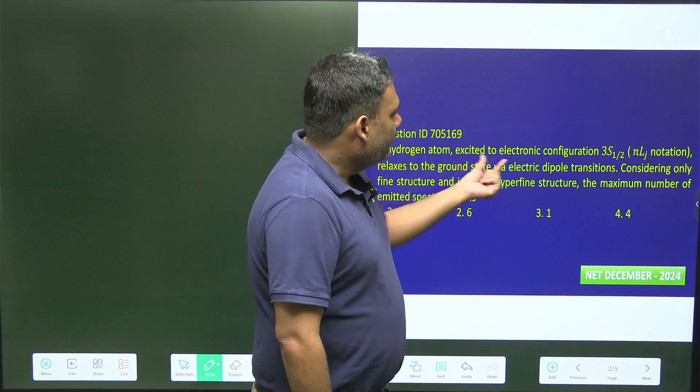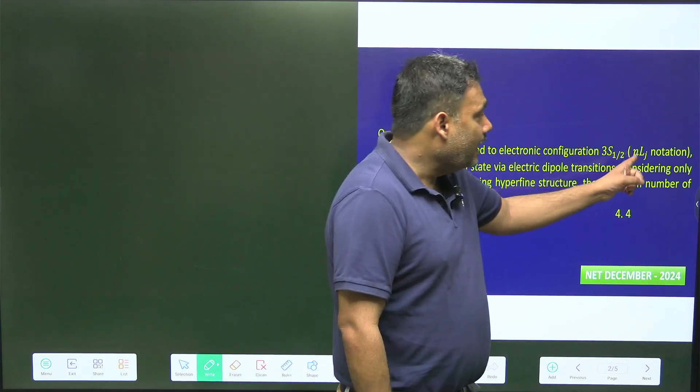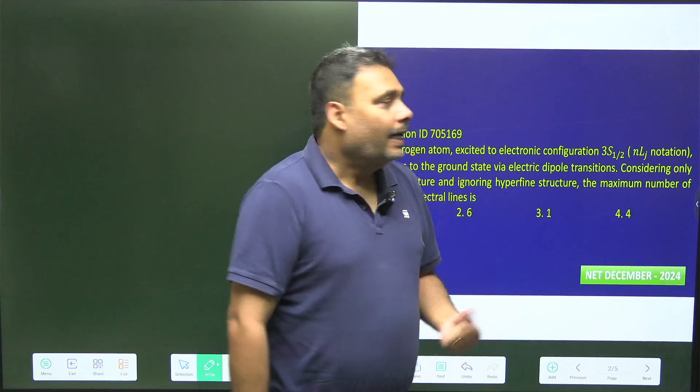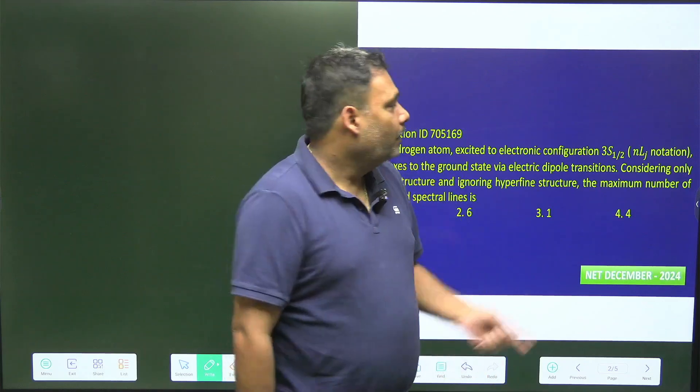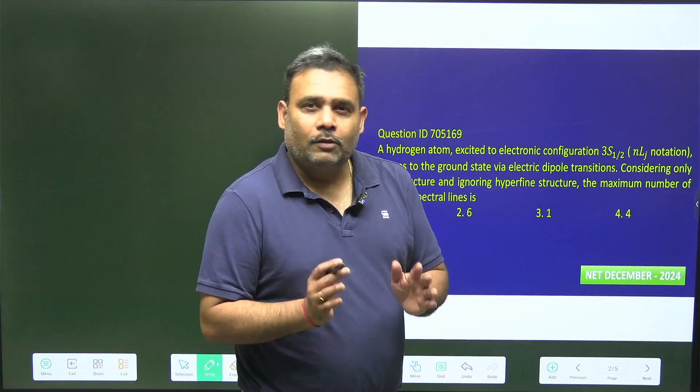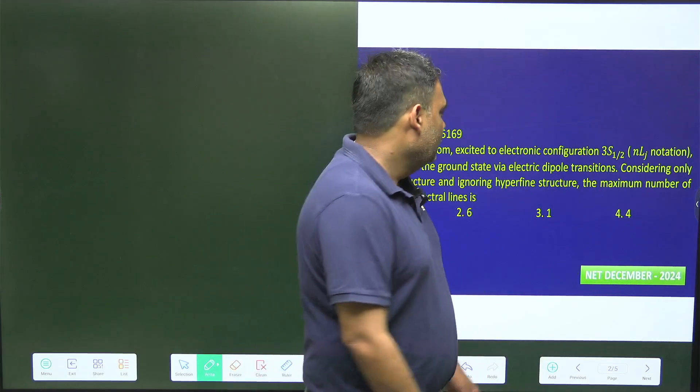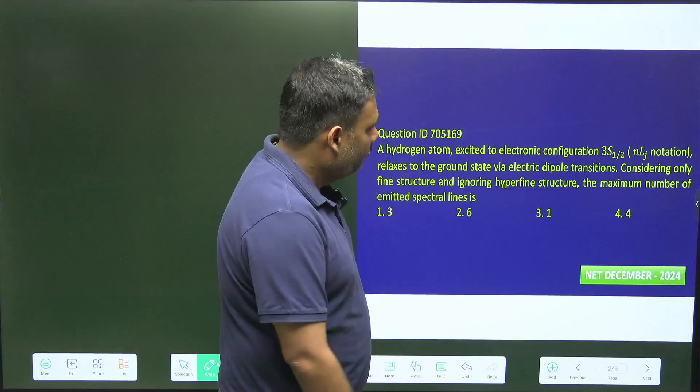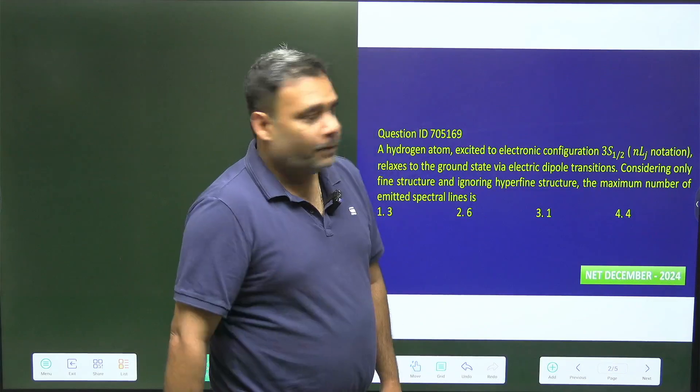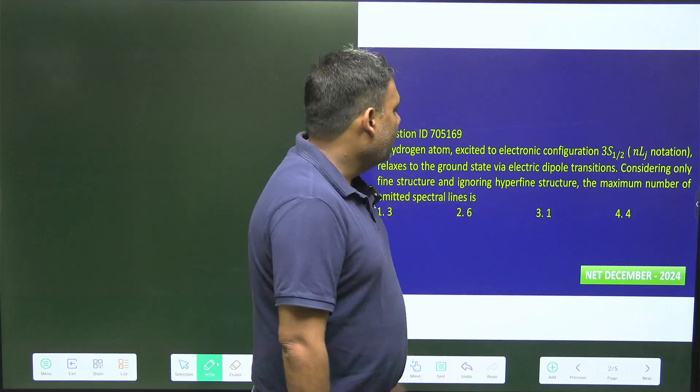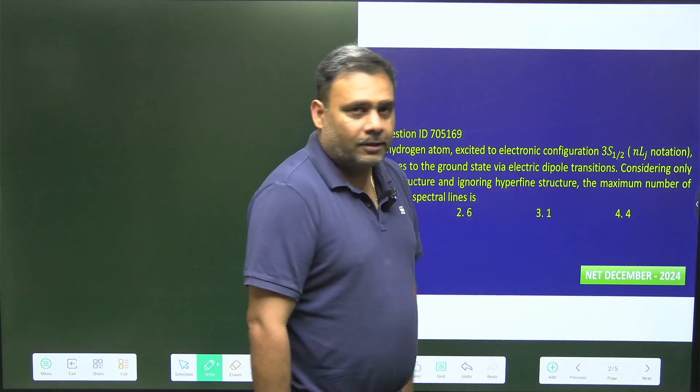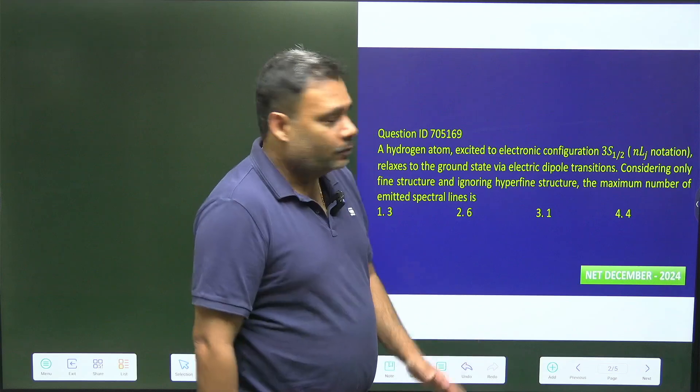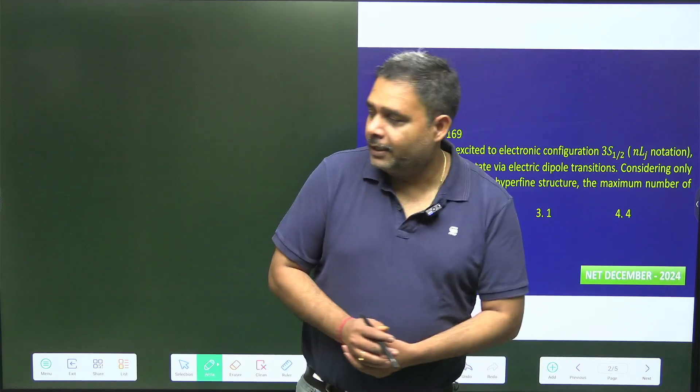The hydrogen atom excited to electronic configuration 3s half in nlj notation. So this is very important: n is principal quantum number, l is orbital quantum number, and j is the total angular quantum number. It relaxes to the ground state via electric dipole transition, so there is a dipole transition and we know the selection rule. Considering only fine structure and ignoring the hyperfine structure, the maximum number of emitted spectral lines is what? So we have to calculate the maximum number of emitted spectral lines.